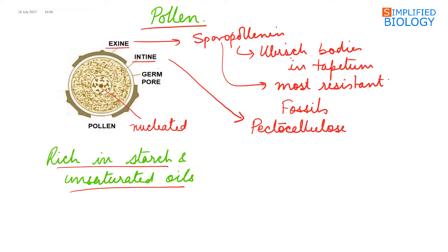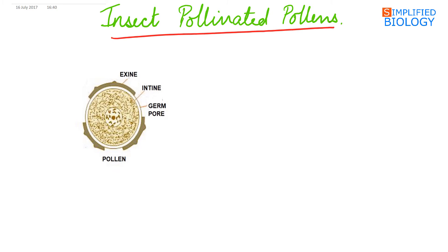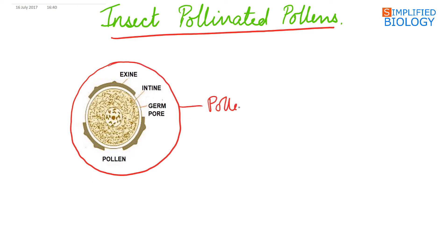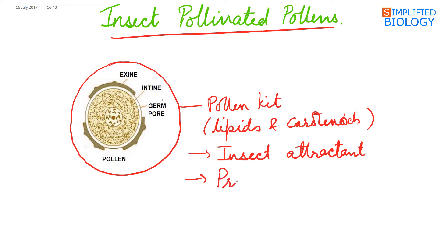There are certain regions in the spore wall where the exine is absent — these form the germ pores. Germ pores are three in number in dicots and one in monocots; it is the region from which the pollen tube comes out. In insect-pollinated plants, present outer to the spore wall is a sticky layer called the pollen kit, made up of lipids and carotenoids. It acts as an insect attractant and also protects the pollens from harmful UV rays.